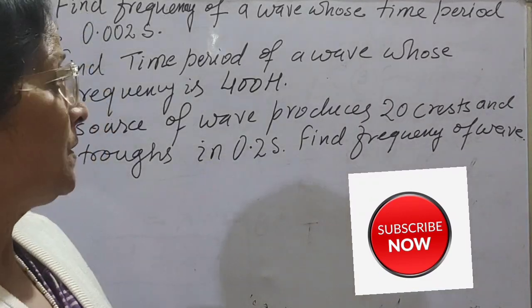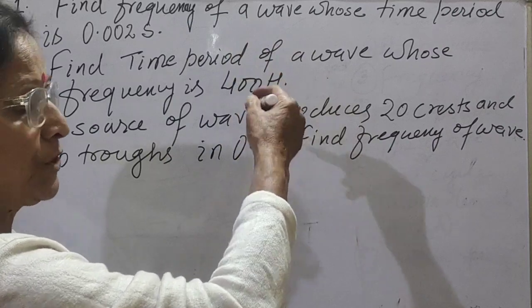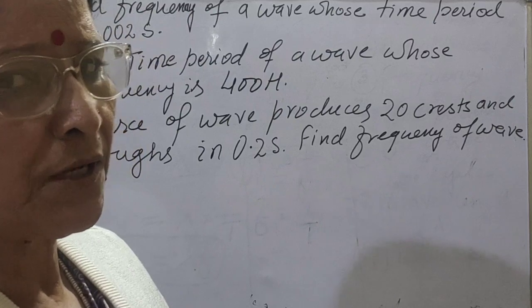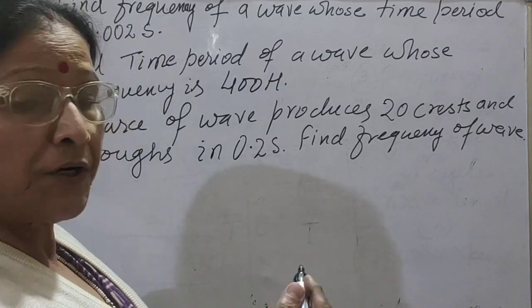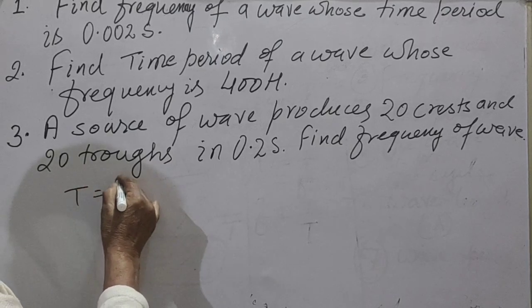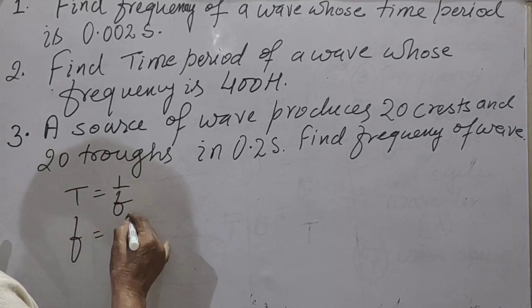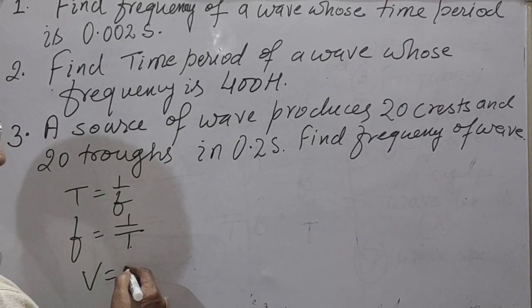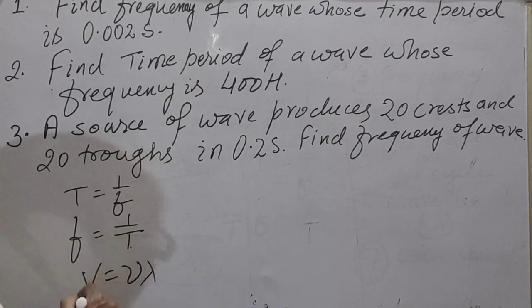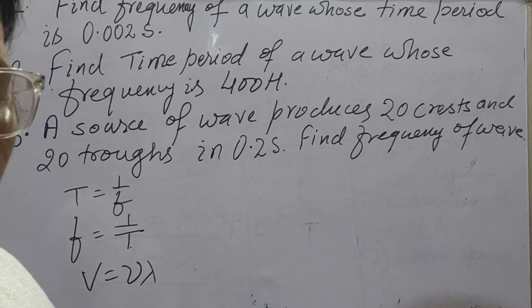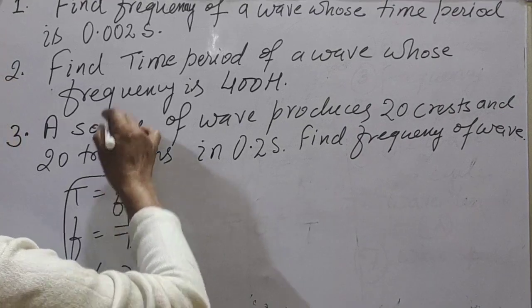Hello everyone. So here we have three questions from the sound chapter based on formulas we have already studied: T is equal to 1 upon F, F is equal to 1 upon T, and V is equal to mu into lambda. We have studied these formulas in the sound chapter, and now based on these three formulas we have three questions to solve.